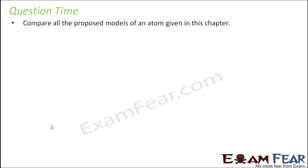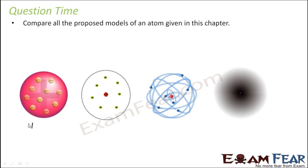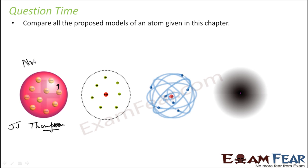Let's take some more numericals now. The first question is to compare all the models proposed in this chapter. The first model is the Thomson model — also called the watermelon or plum cake model. He told that the atom consists of a positive sphere in which electrons are embedded just like seeds in a watermelon or icing on a cake. Total positive charge equals total negative charge, so overall the atom is neutral. These are held together by the electrostatic force of attraction. But he could not explain the Rutherford scattering which was done later, and it was not based on experimental data.